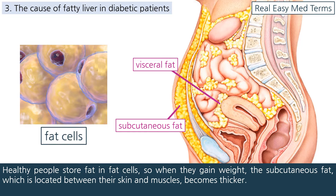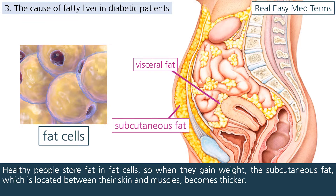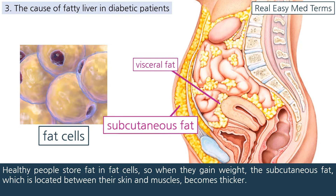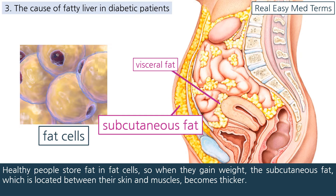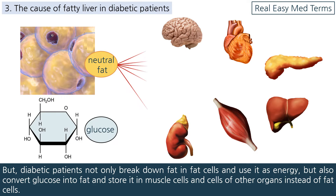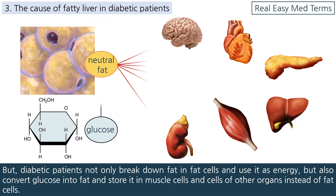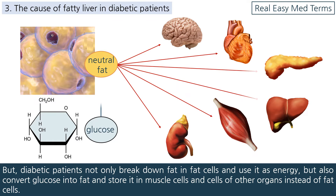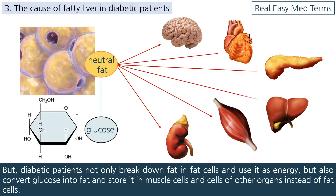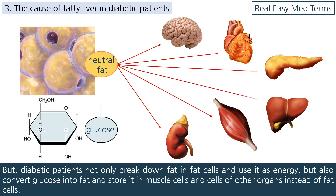Healthy people store fat in fat cells, so when they gain weight, the subcutaneous fat located between their skin and muscles becomes thicker. But diabetic patients not only break down fat in fat cells and use it as energy, but also convert glucose into fat and store it in muscle cells and cells of other organs instead of fat cells.